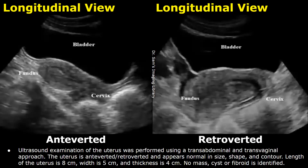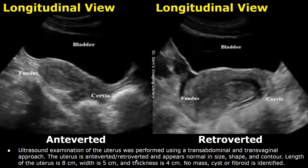This report is of a normal uterus. You can start by writing: 'Ultrasound examination of the uterus was performed using a transabdominal or transvaginal approach, or both.' After that, you can write the position of the uterus, whether it is anteverted or retroverted, or anteflexed or retroflexed. Then you can talk about its shape, size, and contour.